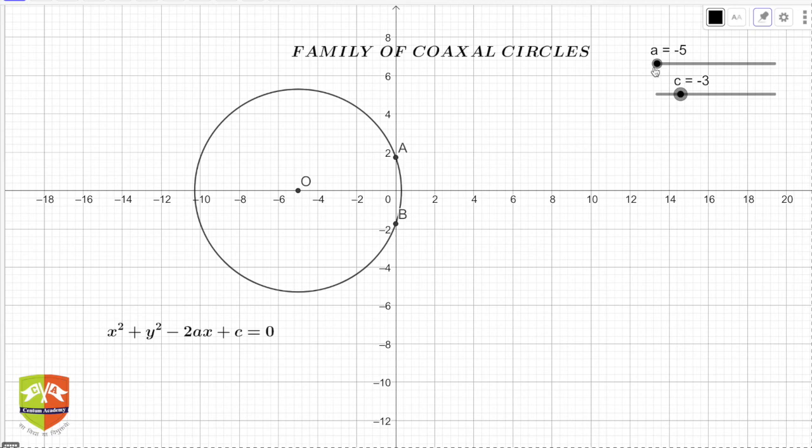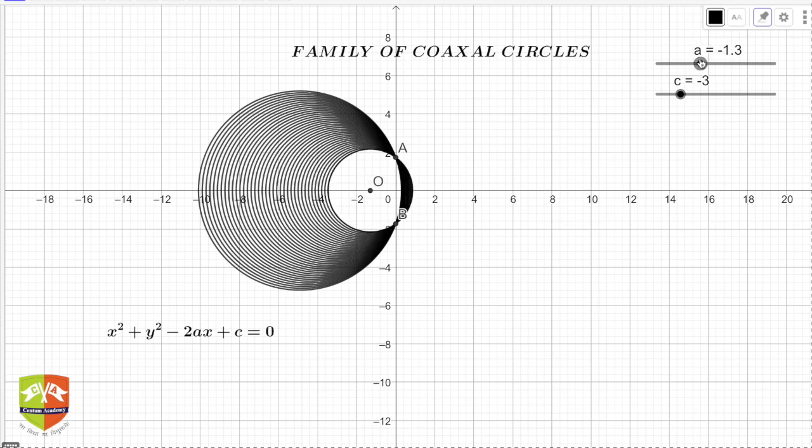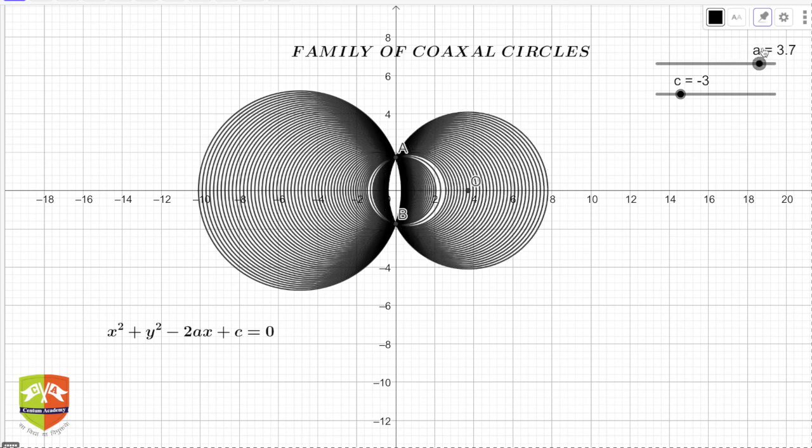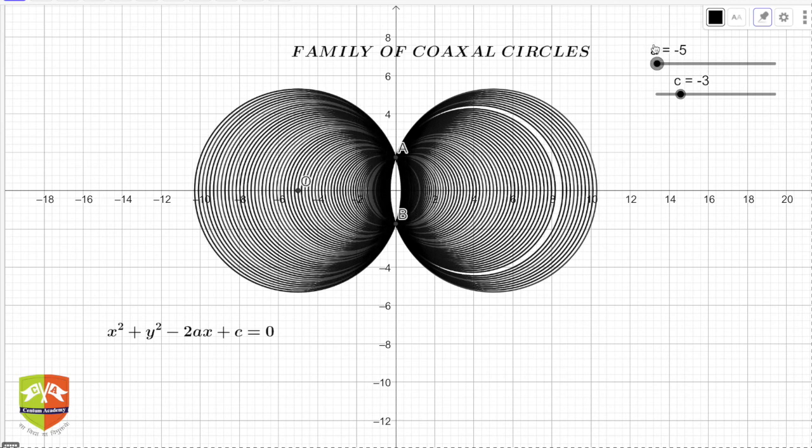If I change the value of a, this is what it is going to be. All the circles are passing through A and B. So now the circles are all passing through the points A and B, a set of coaxial circles when c is negative.